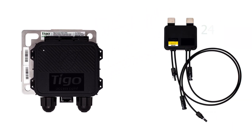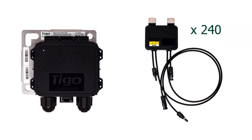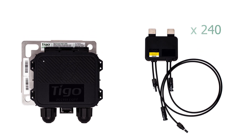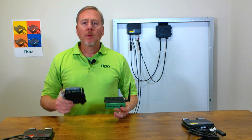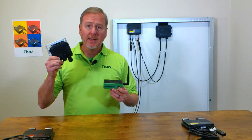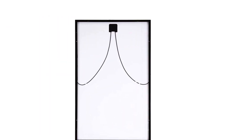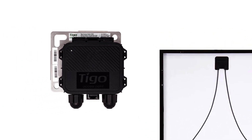A single TAP can communicate wirelessly with up to 240 TS4s. The TAP is connected on the roof, just like the TS4s.